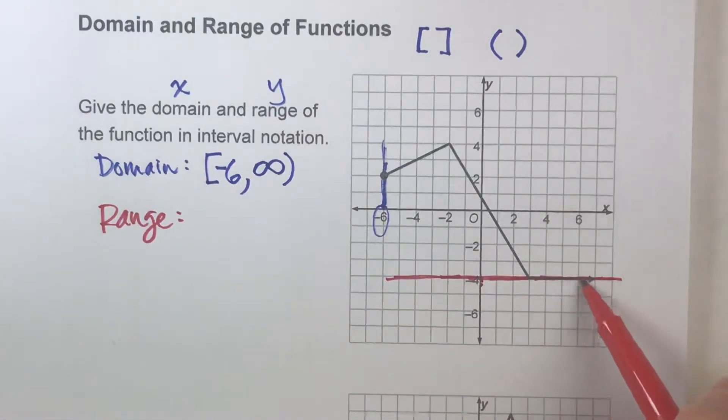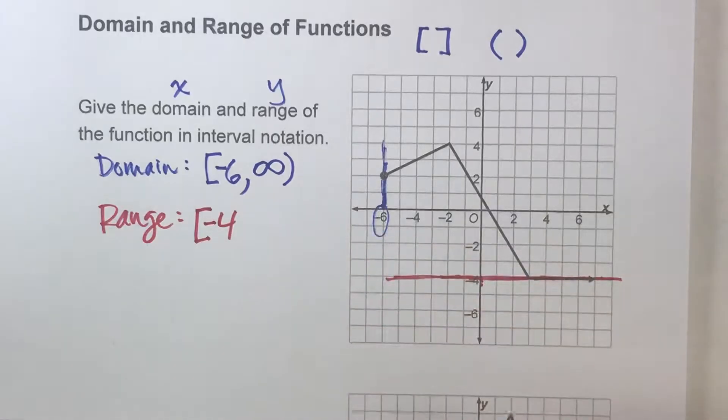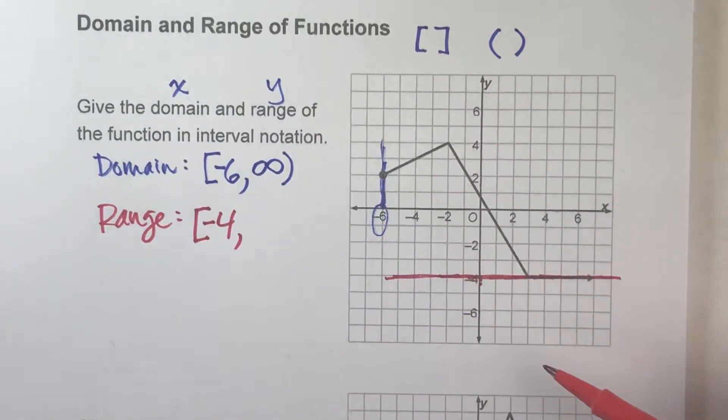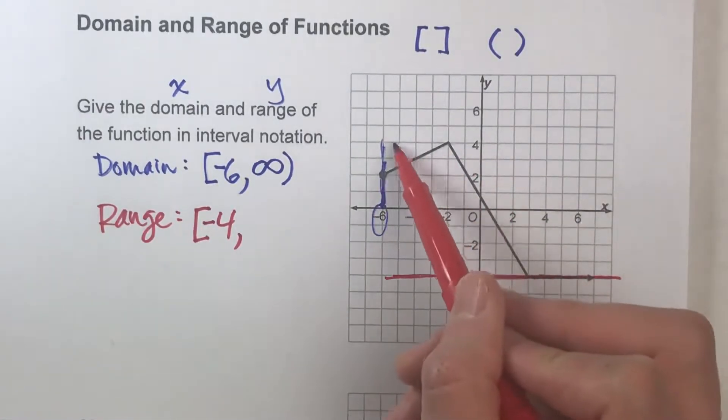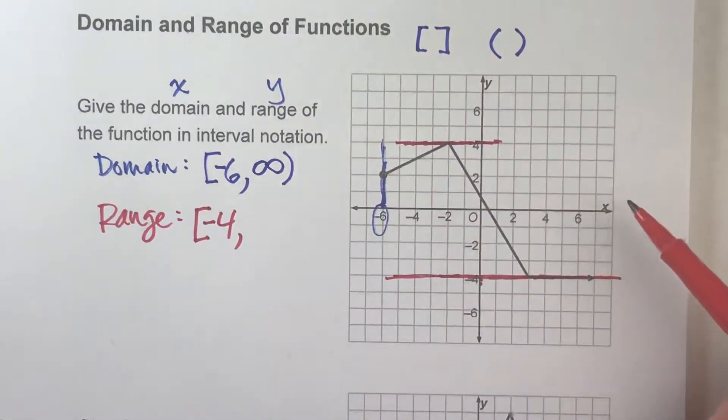Well, yeah, it's pretty much just sitting at negative 4 forever, basically. So we'll say there's a bracket, and there's your negative 4, because y can be negative 4. Now, what's the biggest y value it can be? Let's see. It goes up to right about there. It goes up to 4. Can it be 4?